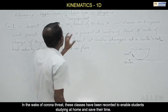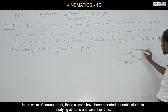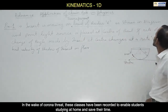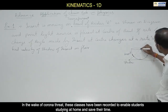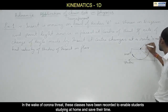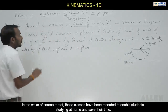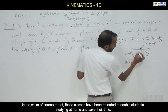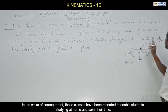An insect is moving on a transparent bowl. This is a transparent bowl of radius r as shown in the diagram. A point light source is placed at the center of the bowl. The angle theta is made by the insect at the center, and the rate of change of that angle is given.